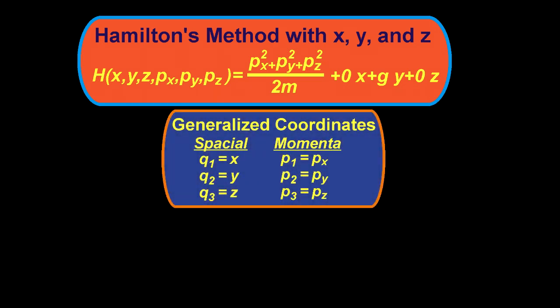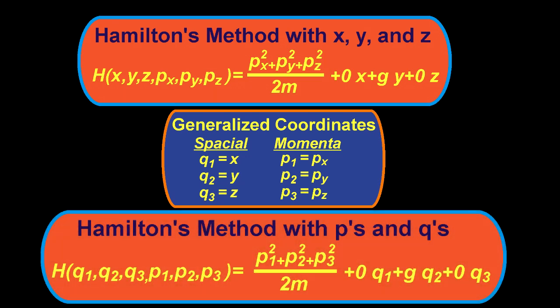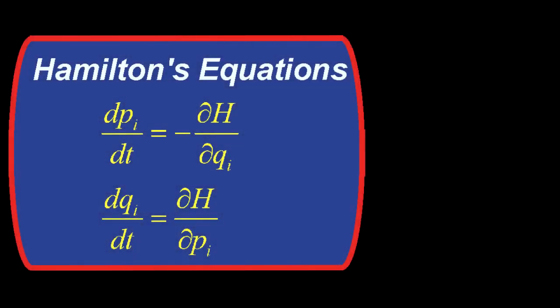The coordinates that you do select are called generalized coordinates, and the letter q is used for them. The corresponding momenta are still called p but have integer subscripts instead of x, y, and z. The trick is to pick a set of p's and q's that give a simple equation for the energy, h, which is usually called the Hamiltonian. Once you do that, you can solve for how the system moves in time with Hamilton's equations. Here they are.